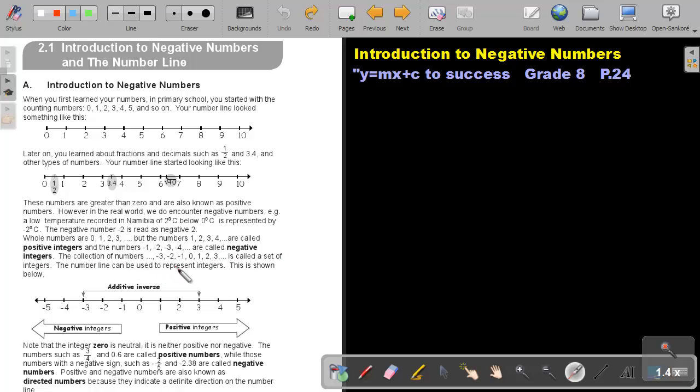The numbered line can be used to represent integers. This is shown below. Now, there is 0, so just as I go to the positive numbers, I do exactly the same to the negative side. I just put a negative in front of the numbers.